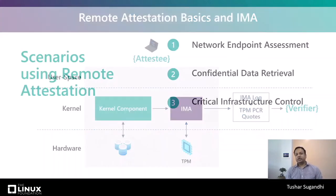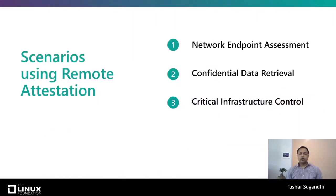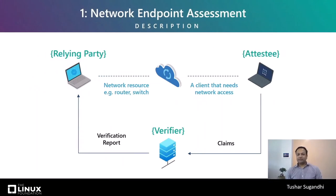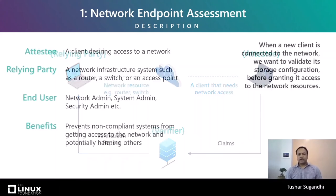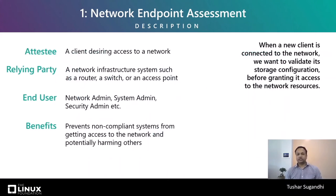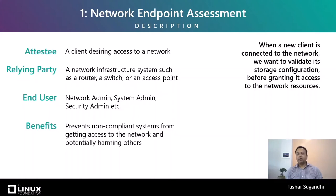Now let's dive into the scenarios that can take advantage of remote attestation. In a network endpoint assessment scenario, the relying party is some network resource and the attestee is a client that needs network access. Whenever a new client wants to get access to the network resources, the relying party would want to validate its storage configuration before granting access. The relying party and the end user are two different entities — the relying parties are systems on the network talking to the new client, while end users are the actual network administrators in charge of protecting the networks. Remote attestation in this scenario prevents non-compliant clients from getting access to the network and potentially harming other systems.